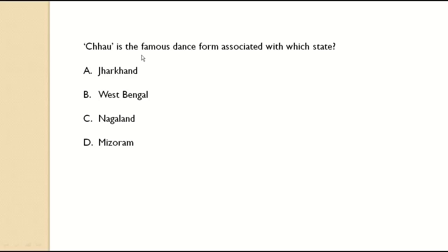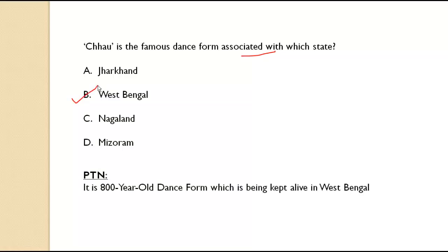Chhau is the famous dance form associated with which state? It is prevalent in West Bengal. Chhau is an 800-year-old dance form which is being kept alive in West Bengal.